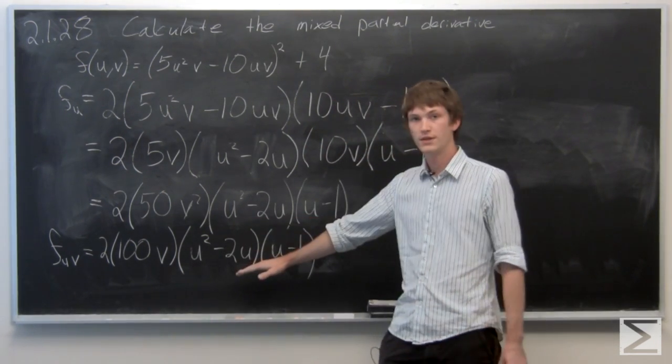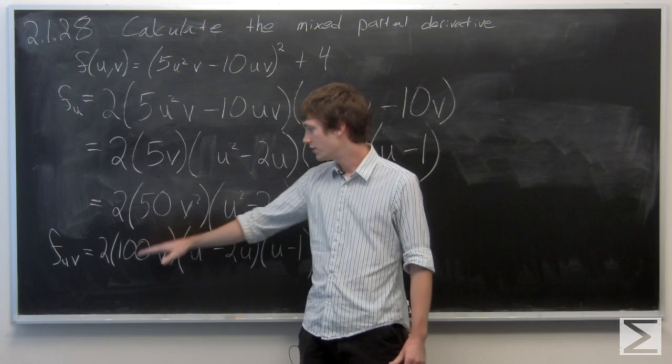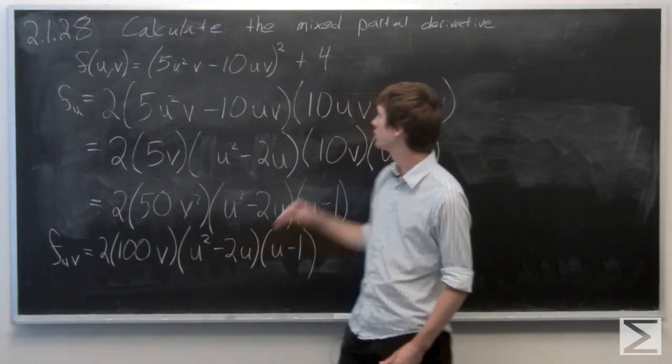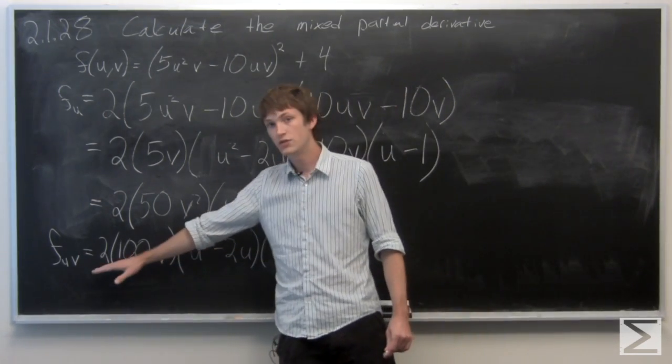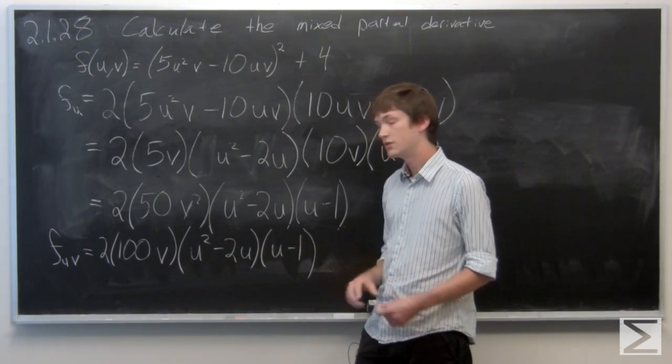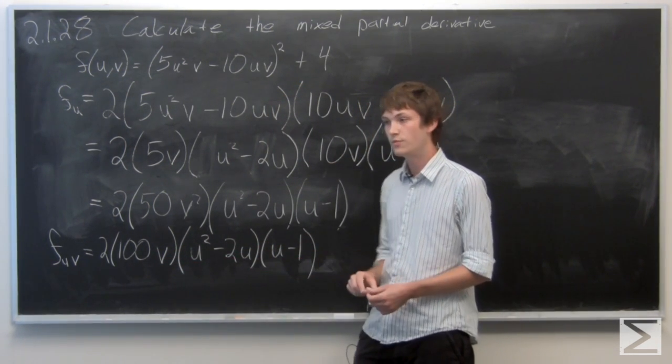So we see that this term remains the same. And we just have the mixed partial derivative with respect to uv is 200v times u² minus 2u times u minus 1.